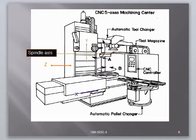5-axis means X-axis, Y-axis, Z-axis, and two rotational axes A and B — total 5 axes. This machining center contains an automatic tool changer, a tool magazine, and automatic pallet changers.